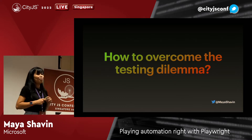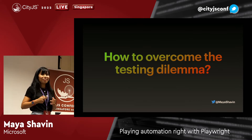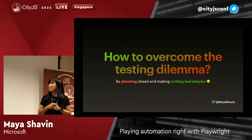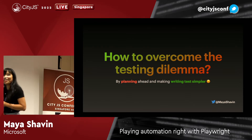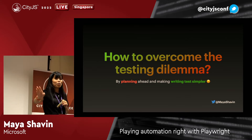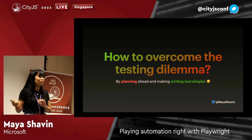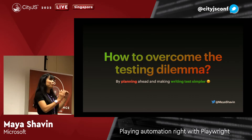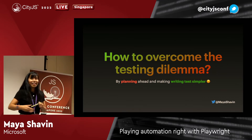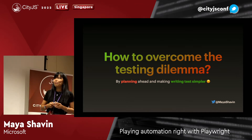So how do we overcome this testing dilemma? Planning ahead and making things simpler. Planning ahead — everyone knows about it. In Google, in Stack Overflow, everyone talks about how to plan your tests ahead. You have test-driven approaches and different approaches to ensure you write tests accordingly. But still, it doesn't always help. And making writing tests simpler — not every framework will give you that.